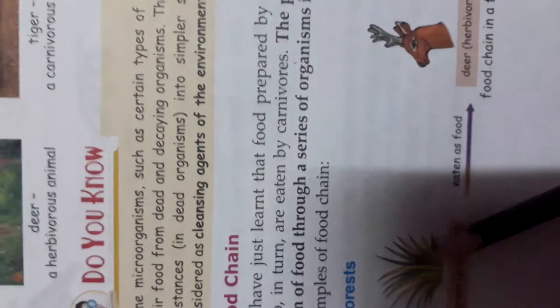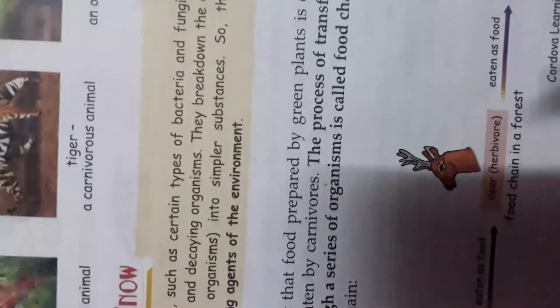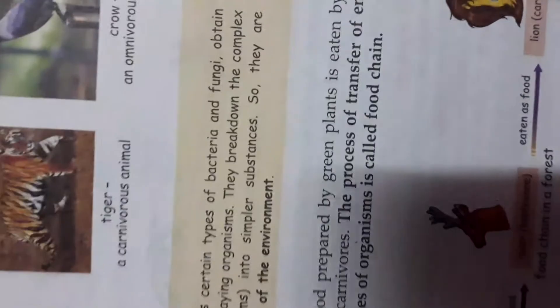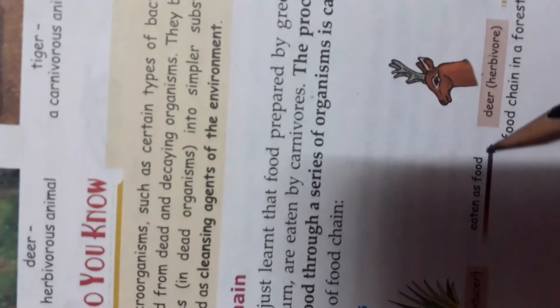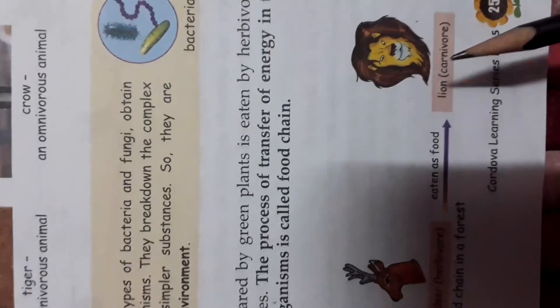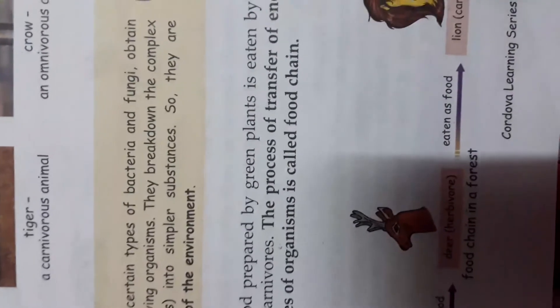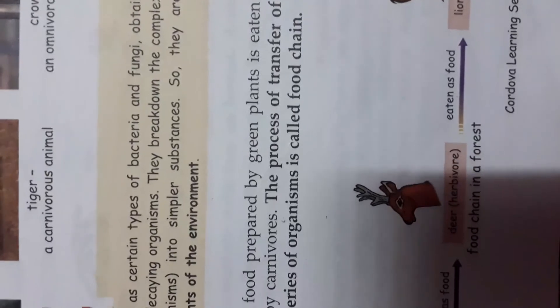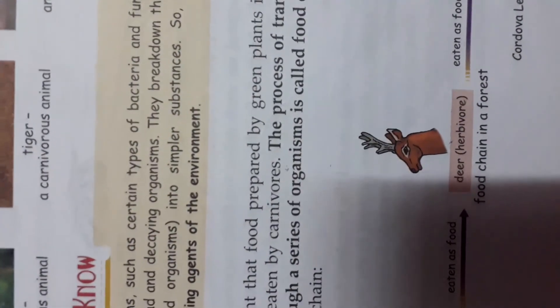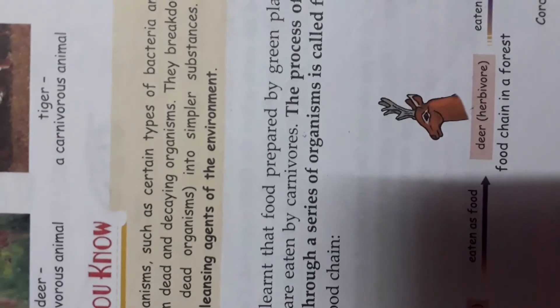In this food chain: grass is eaten by deer (herbivorous), who is eaten by the lion (carnivorous). This food chain is found in forest areas. The rest of the topic I will teach you in the next class. Just revise your chapters properly and learn it. Thank you.